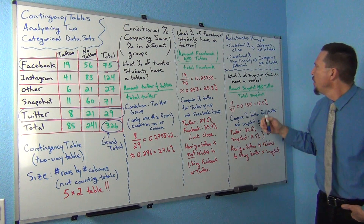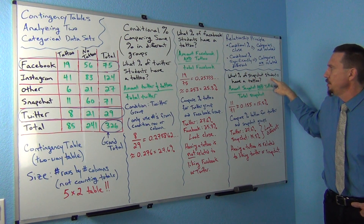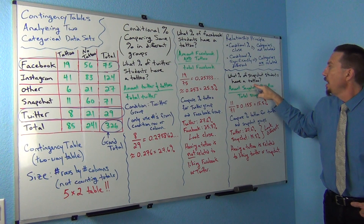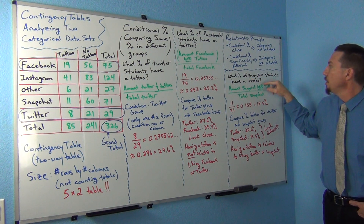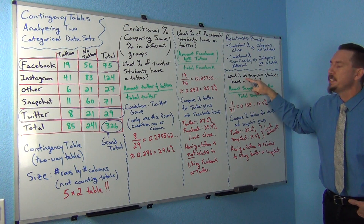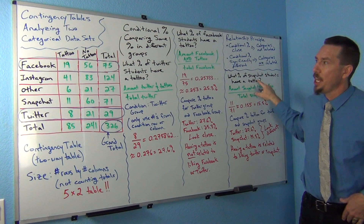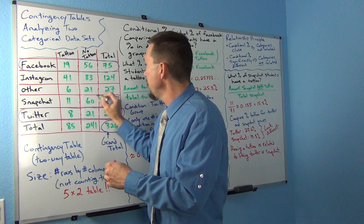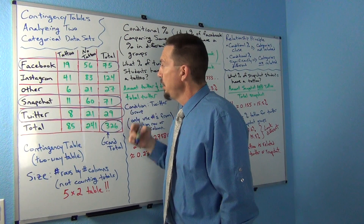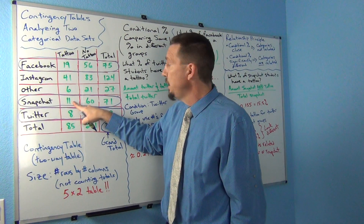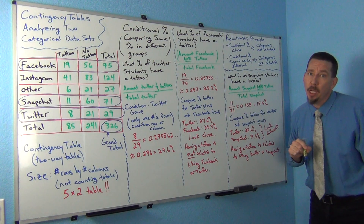Now let's look at another one: what percentage of Snapchat students have a tattoo? The condition is Snapchat — it says 'of Snapchat students,' so I circle that row. The amount with a tattoo in that row is 11, and the total for that row is 71. So for Snapchat, 11 out of 71 had a tattoo.